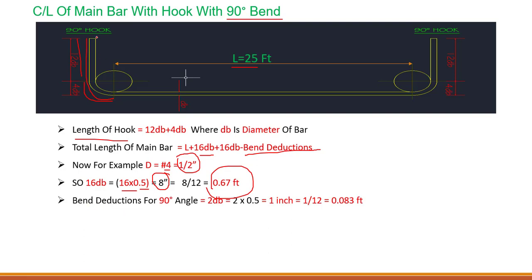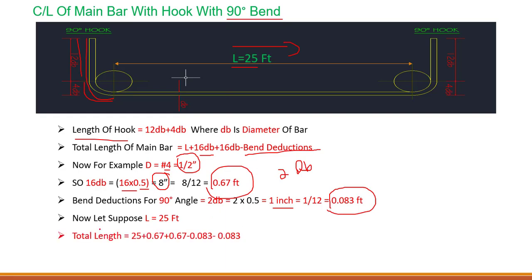For a 90-degree bend, the bend deduction is 2db. So 2 x 0.5 = 1 inch, which is 0.083 feet (dividing by 12 to convert inches to feet). If L is 25 feet, the total length equals 25 feet plus 0.67 feet plus 0.67 feet minus 0.083 feet minus 0.083 feet for the two 90-degree bends. So the total cut length for this 90-degree bend main bar is 26.174 feet.